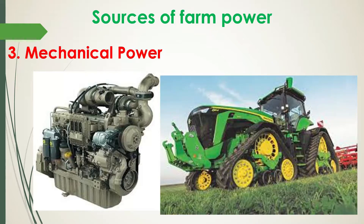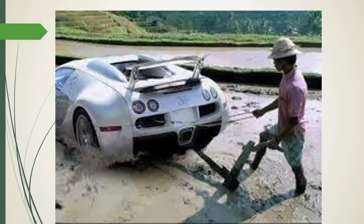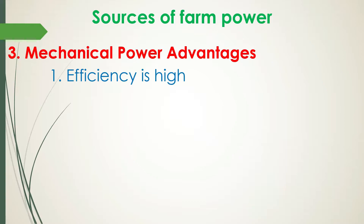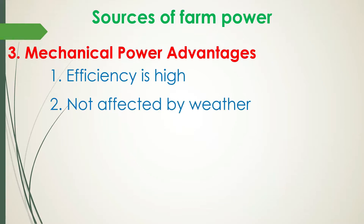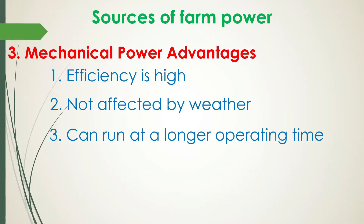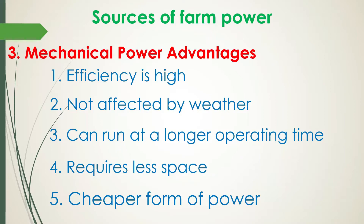Diesel engines of the larger size are used on tractors. It is estimated that about 1 million tractors of about 25 BHP range are in use for agricultural operations in the world. Advantages of mechanical power are: efficiency is high, not affected by weather, can run at a stretch, requires less space, and is a cheaper form of power.